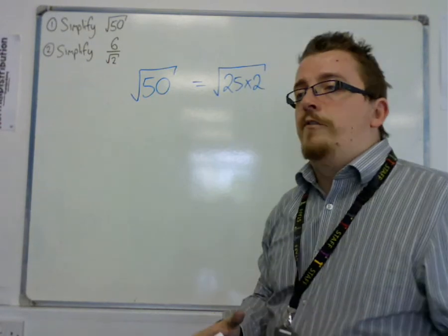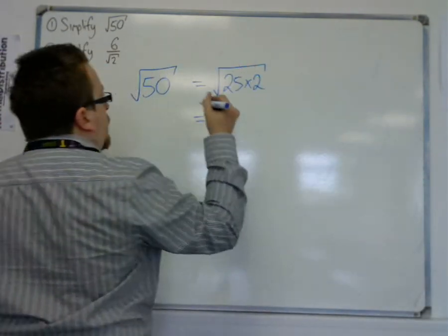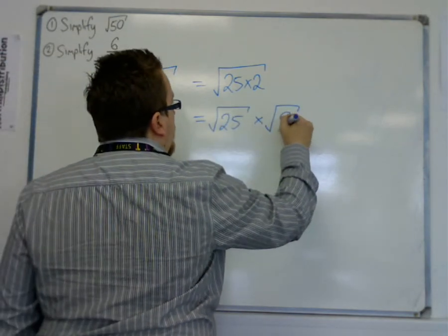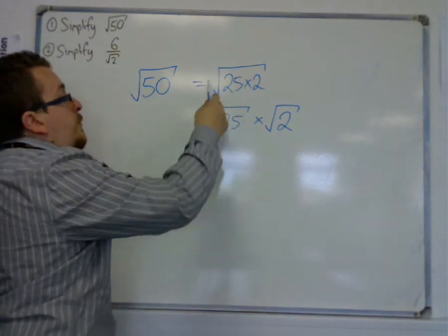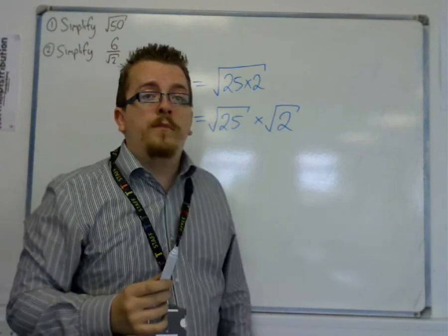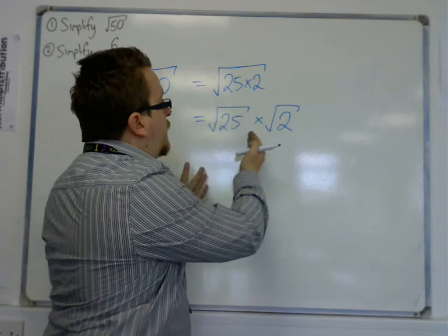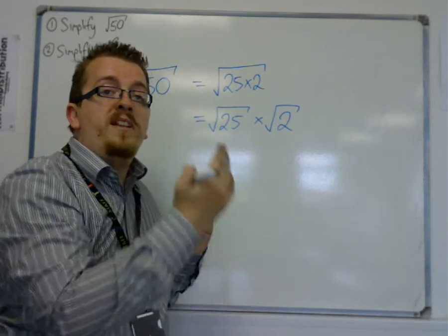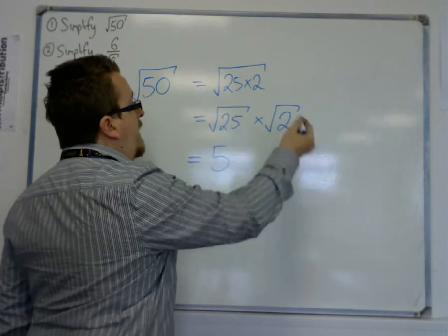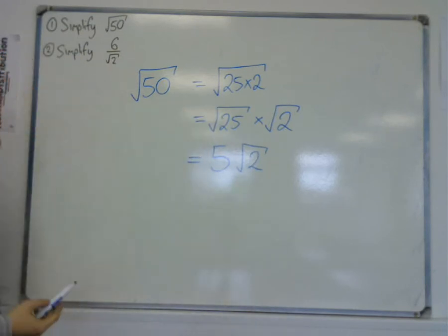Surds have this nice property that allows you to split the surd up like this. So the square root of 25 times 2 becomes the square root of 25 times the square root of 2. We chose to do this in order to break that square root of 25 apart because we know the square root of 25 is just 5. So I can write this as 5 lots of root 2. And that is how you can simplify a surd.